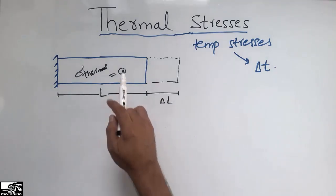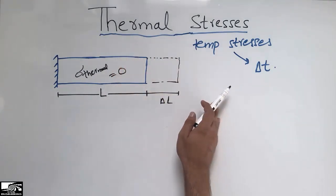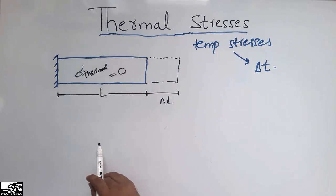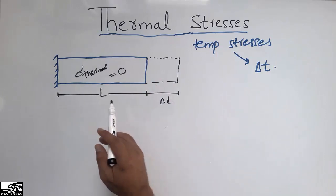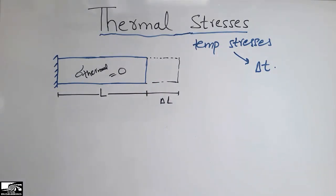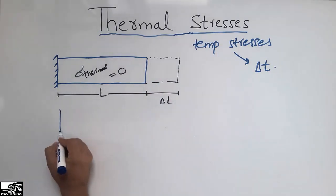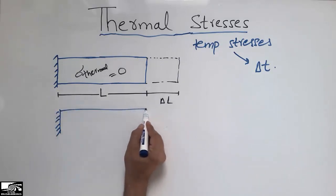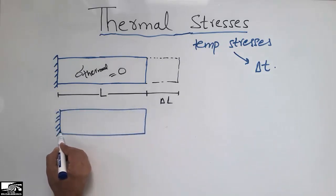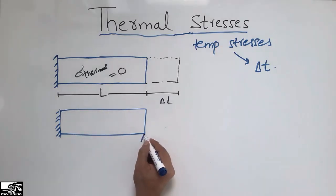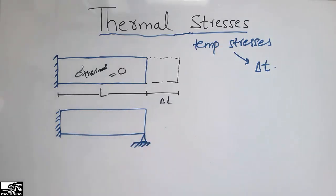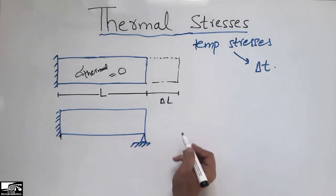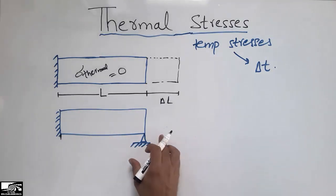You should always keep in mind that thermal stress is only created in an object when there is some restriction applied to it. Now let's consider a similar example — but this time we restrain the object on both sides and increase the temperature.